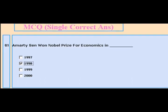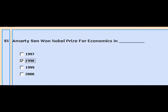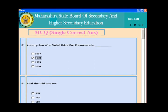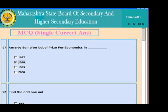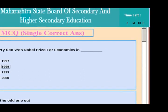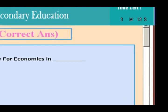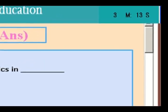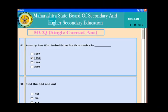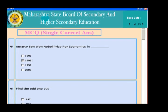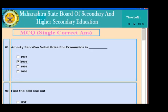Since MCQ1 is a single-correct-answer question, you must select only one option. Sometimes a question may appear without options — note down the paper ID and question number and report to the invigilator. Don't hesitate if the question is not properly delivered to you.